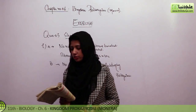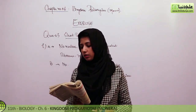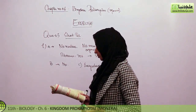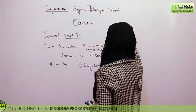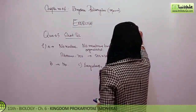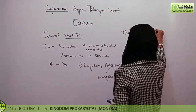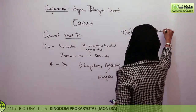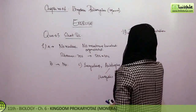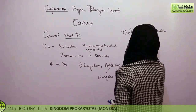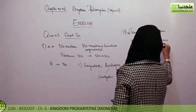Next, second question: list the functions that the cell membrane performs in bacteria. These include transport and regulation, and respiration — because mesosomes are formed from the cell membrane, so mesosome formation is a key function.